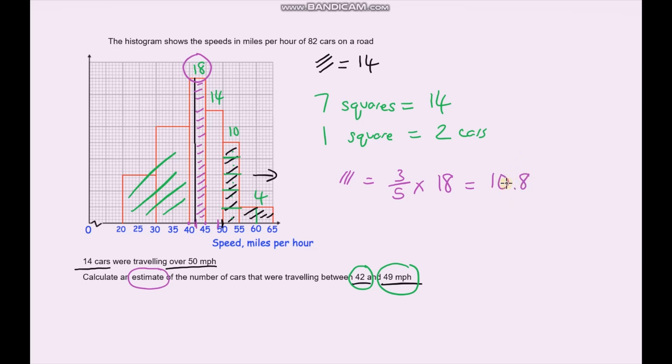You might be thinking, well, we can't have 10.8 cars. Obviously you're right, but this is only an estimate. So when we get our final answer, we can always round it either up or down. Now what I'm going to do is draw another line. But this time, I'm going to draw it at 49 miles per hour because that is our upper limit. What I'm going to do is shade in this area here. We want to work out that area. And again, this is only an estimate. The blue area, we can see that this is four squares along out of five. So it's four-fifths of the total area. So the blue area is going to be four-fifths of 14, which gives us, so let's do that, four-fifths times 14, that gives us 11.2.